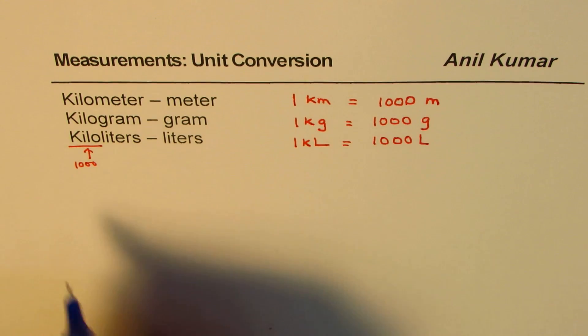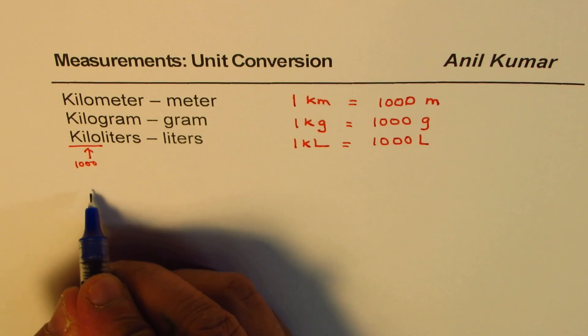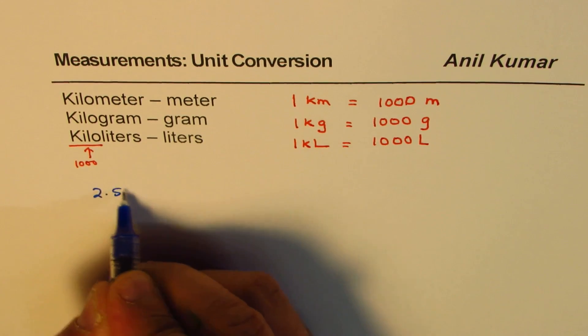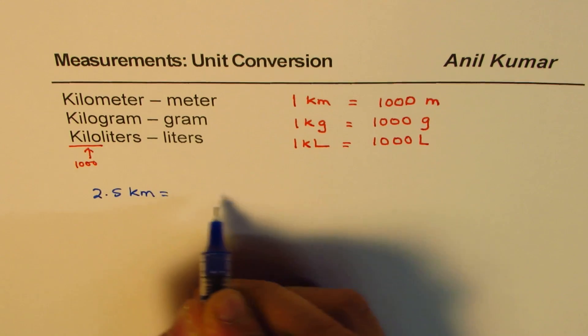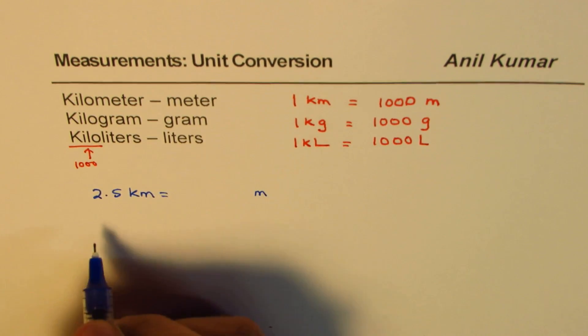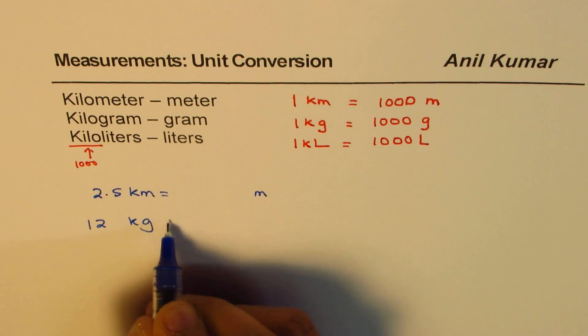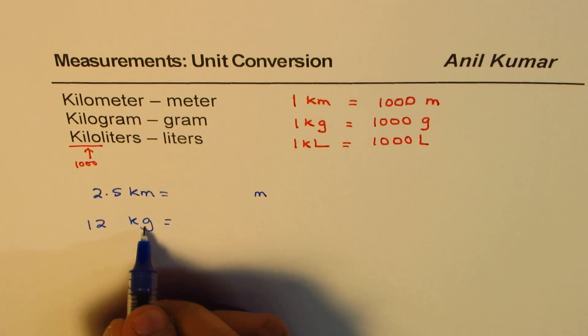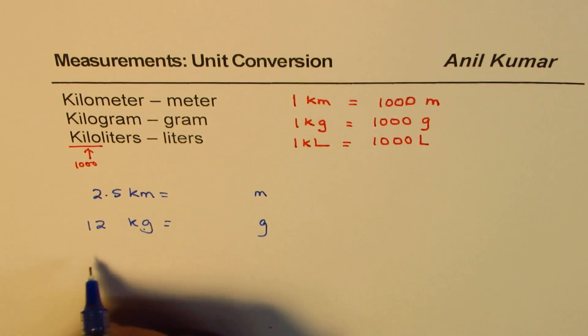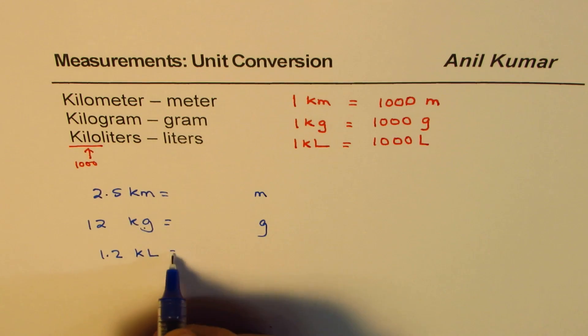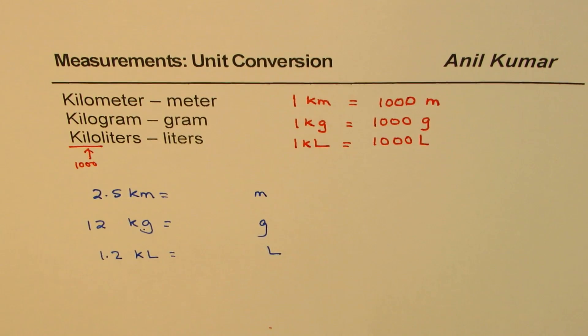So let's take an example here. I will write some numbers. Let's say we have 2.5 kilometers, you need to write that into meters. Then we will have 12 kilograms, we have to write this in grams. And then we have 1.2 kiloliters, write this as liters. So how will you do it?